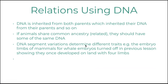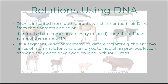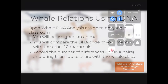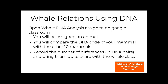We're going to use this to find relationships using DNA. DNA, as we said, is inherited from both parents. With our Whale of a Tail, if the animals share common ancestry, they should have some of the same DNA. The DNA segment variations determine the different traits that the baby or embryo has. In today's activity, you're going to compare the cetaceans to other hooved animals and use DNA to establish relationships of past ancestry.